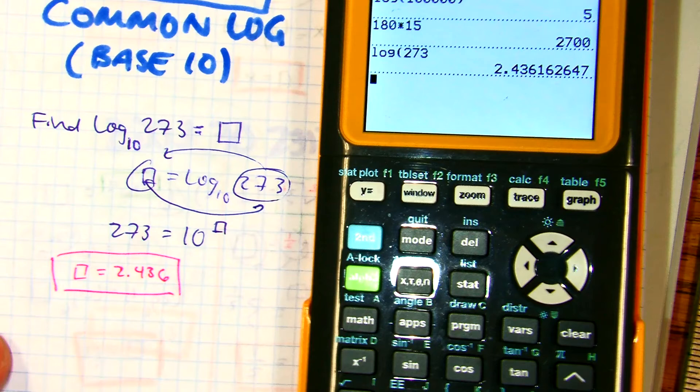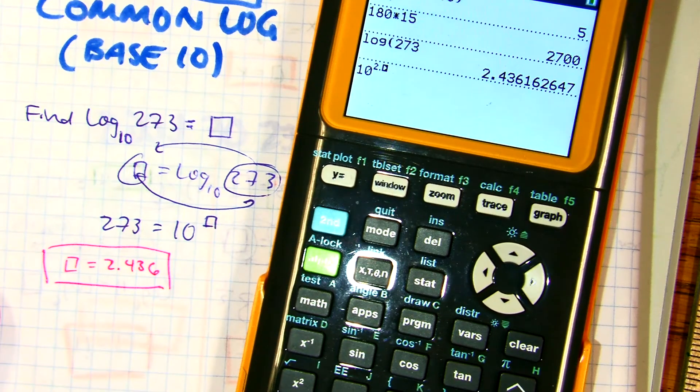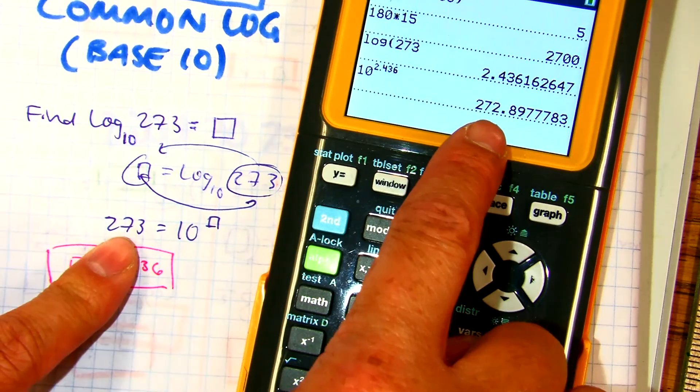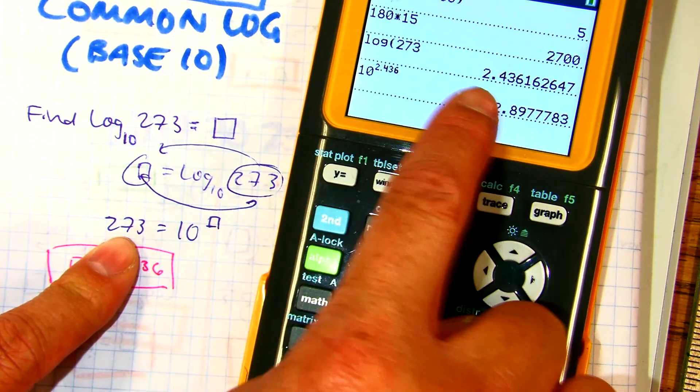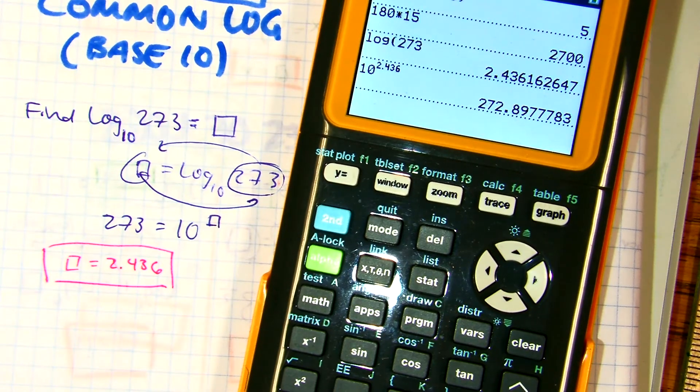Let's check that. Let's put it in. 10 to the 2.436. And I got pretty close to 273. And if I keep adding more and more decimals, it would get exact. So, let's go ahead and see.